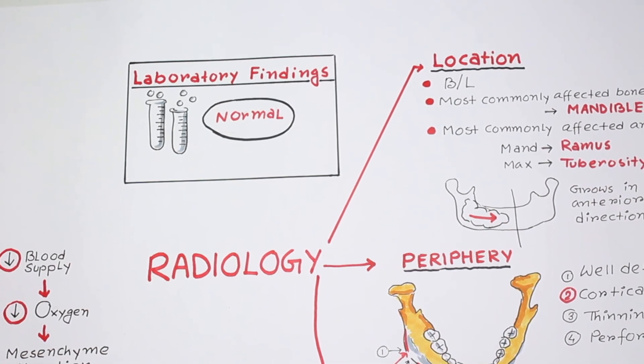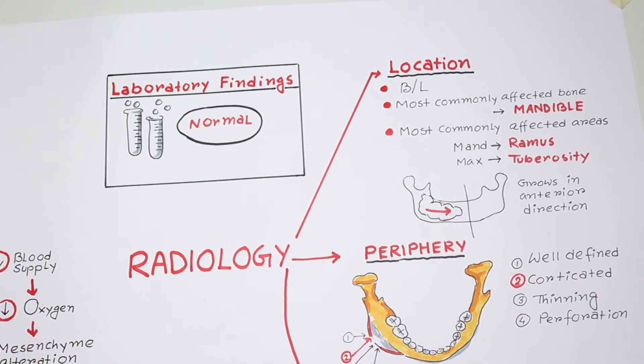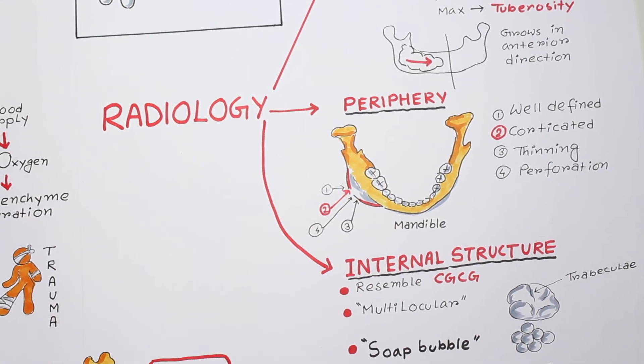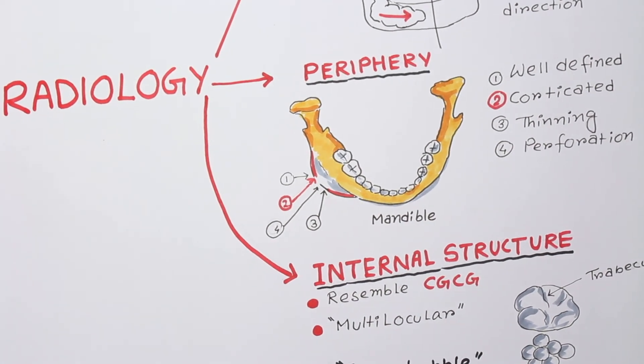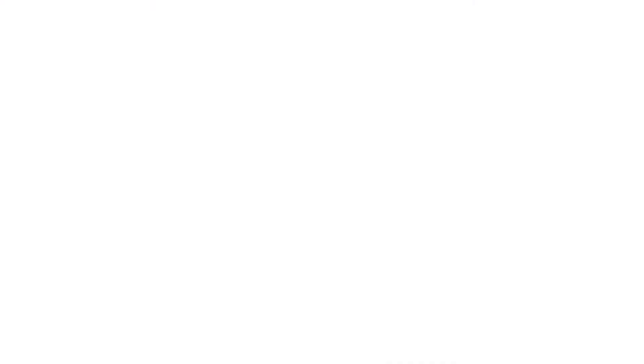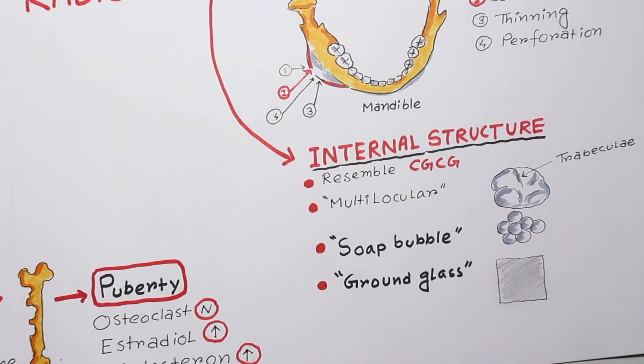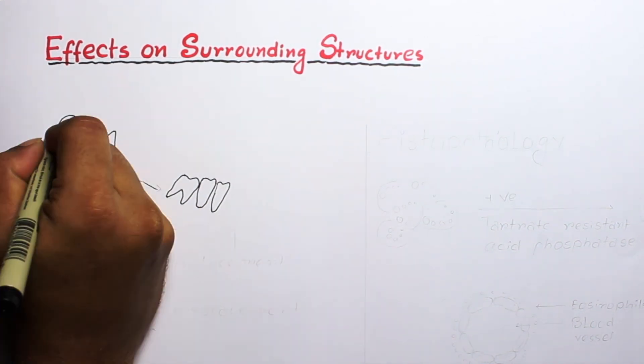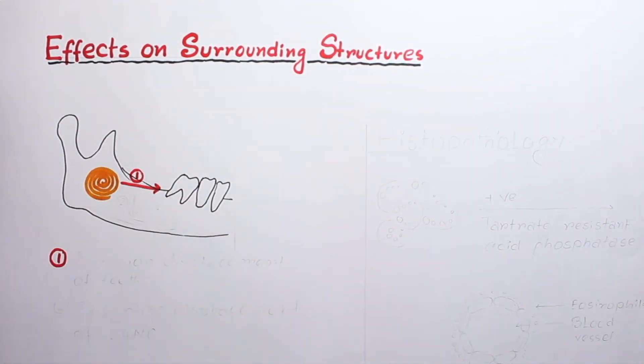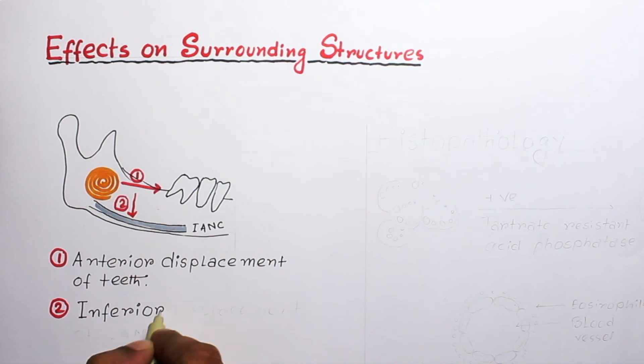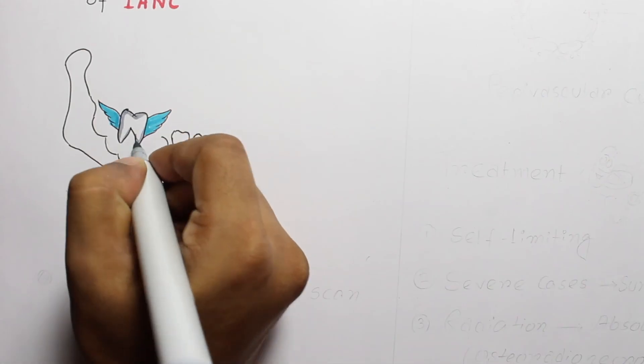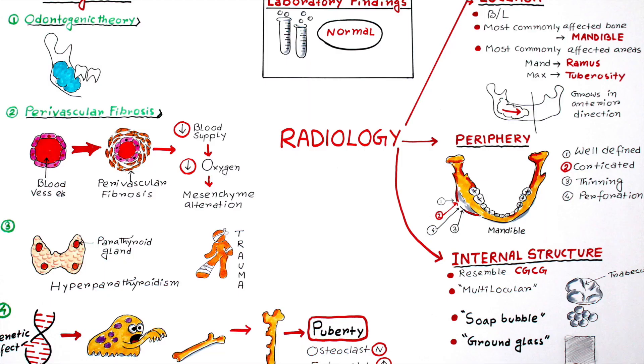Radiographically it is bilateral. Most commonly affected areas are ramus and tuberosity. The lesion is well defined, corticated, and thinning and perforation is also noted. Two important radiographic findings are soap bubble and ground glass appearance. It can cause anterior displacement of teeth and inferior displacement of inferior alveolar nerve canal and a typical floating tooth appearance.